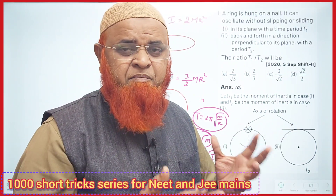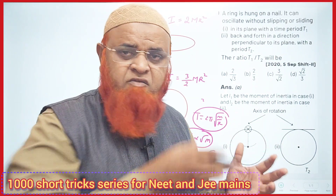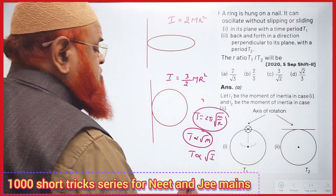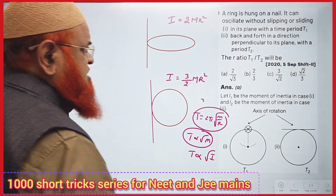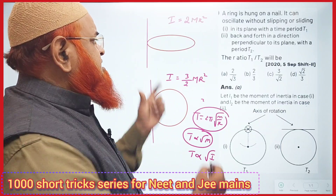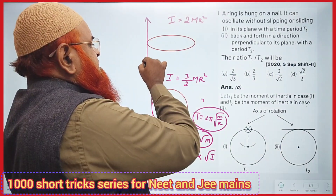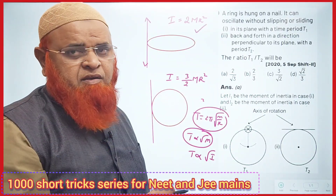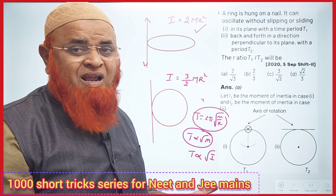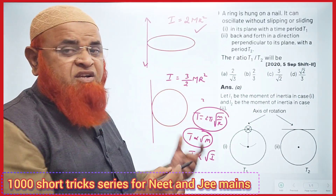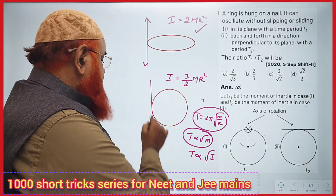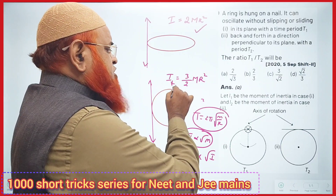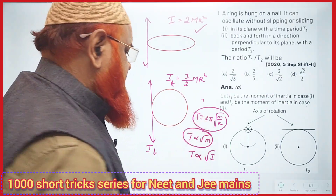The same ring is oscillating in two different ways as shown in the diagrams. Time period is directly proportional to root of moment of inertia. For the ring oscillating about the axis shown, the moment of inertia is 2mr² (using the parallel axis theorem). For oscillation along the tangent, the moment of inertia is 3/2 mr².